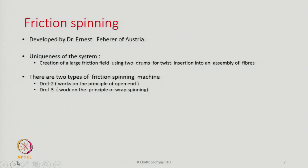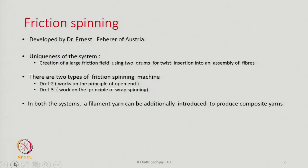There could be two types of friction spinning machines: drape 2 and drape 3. Drape 2 works on the principle of open end spinning and drape 3 is basically on the principle of wrap spinning. Our focus today will be mostly on the drape 2 machine. In both systems, additionally a filament yarn can be incorporated to produce composite yarns.